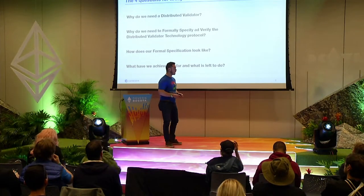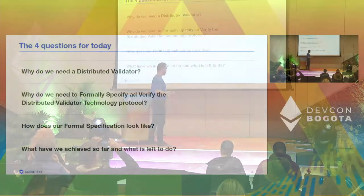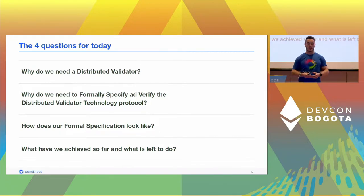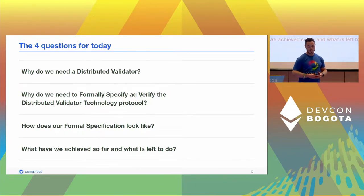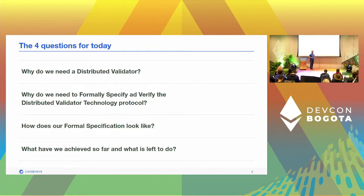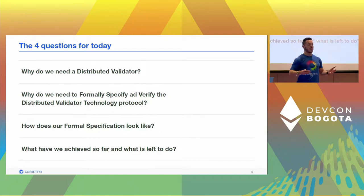Thank you for making it today. As the title says, I'll be presenting on our work on formally specifying and formally verifying the Distributed Validator Technology protocol. The way I'm going to do so is by answering four key questions: why do we need a distributed validator in the first place, why do we need to formally specify and verify the DVT protocol, how does our formal specification look, and finally what we've actually achieved so far and what is left to do.